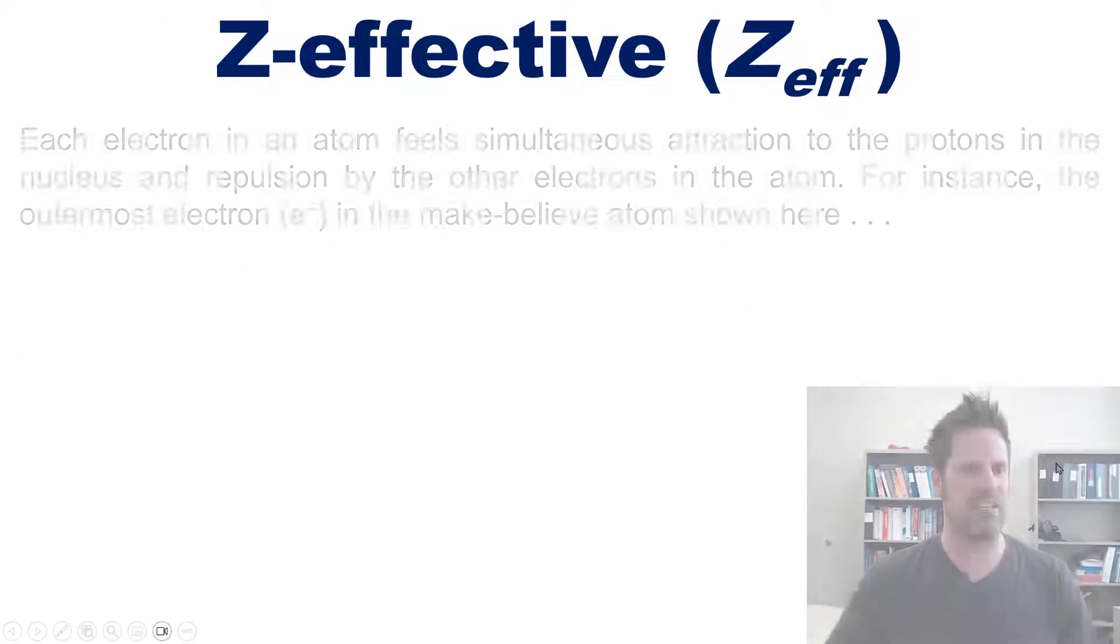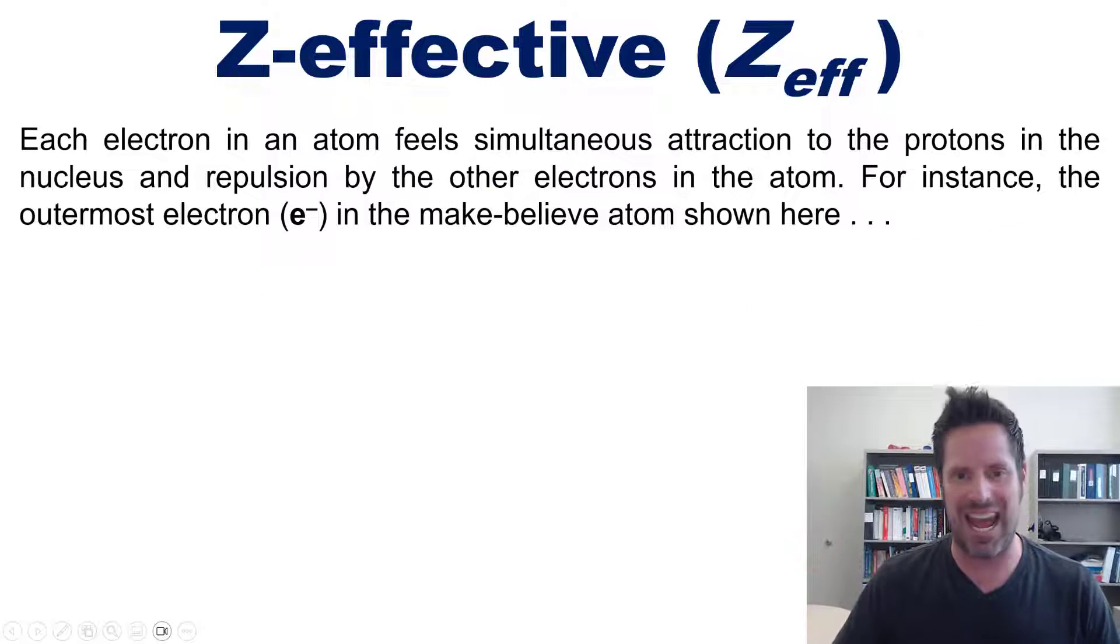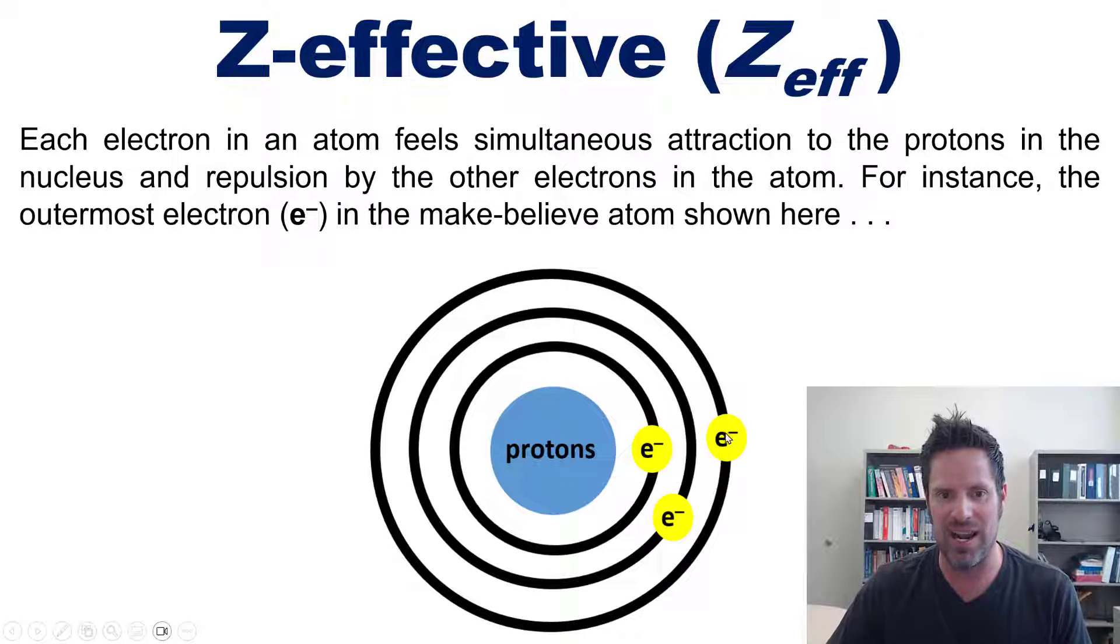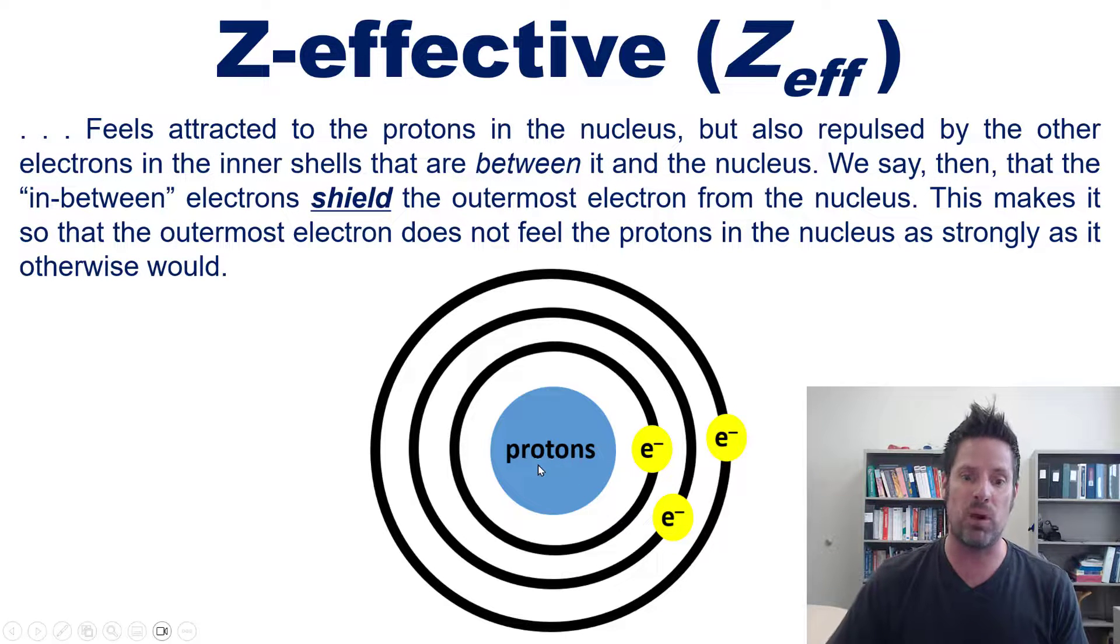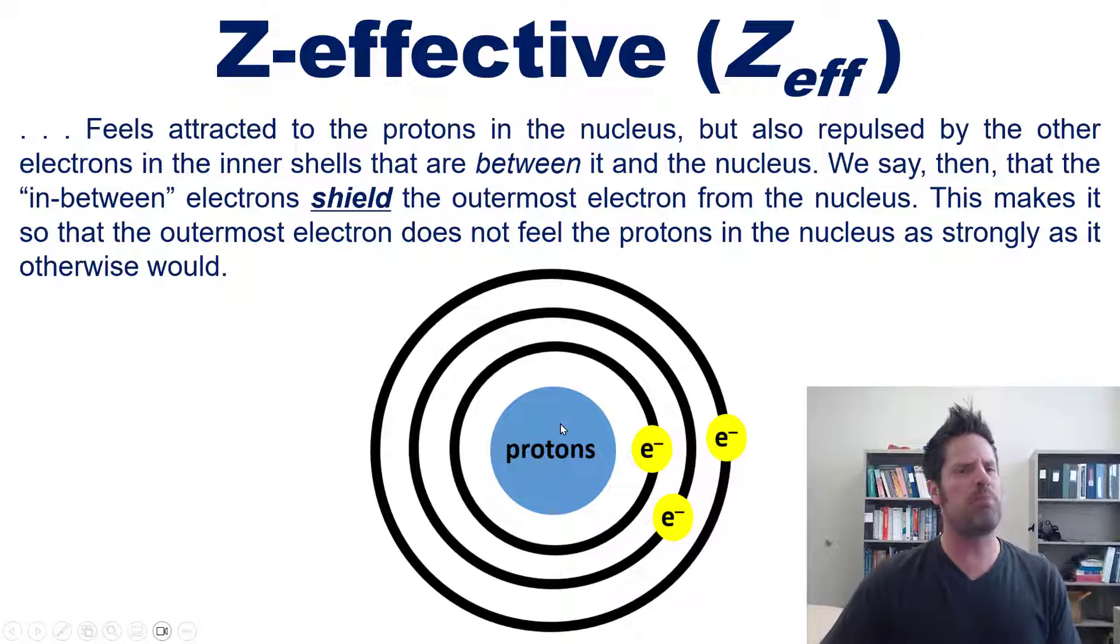Each electron in an atom simultaneously feels attraction to the protons in the nucleus and repulsion by the other electrons. For example, the outermost electron in this make-believe atom feels attracted to the protons in the nucleus but also repulsed by the other electrons in inner shells between it and the nucleus.